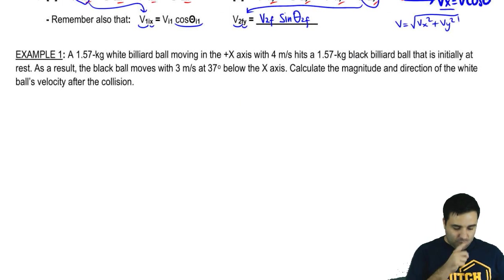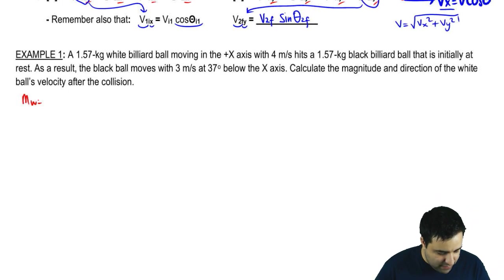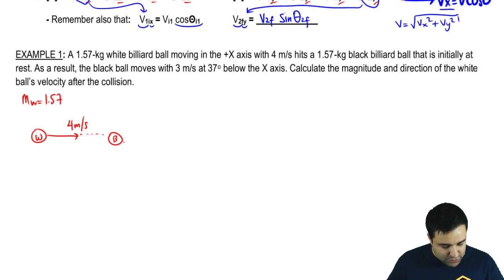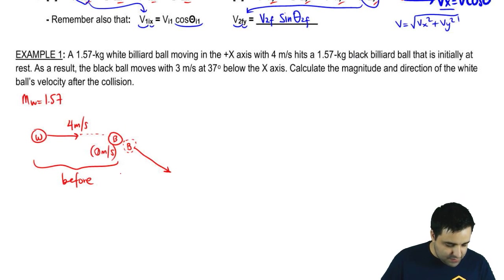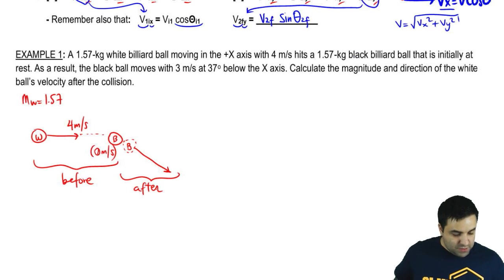So let's do an example real quick to see how this works. I have a white billiard ball. Mass of white is 1.57. And the ball's going to go this way with 4 meters per second. And then it's going to hit a black ball. And after the collision, the black ball is going to, black ball is originally at rest. I'm going to put 0 meters per second here. After the collision, the black ball is going to go this way. I'm doing the dotted lines to signify that this happens later. So this is sort of before to the left and after to the right. Before the collision. And then this is after the collision. So it moves this way with 3 meters per second at 37 below the x-axis.